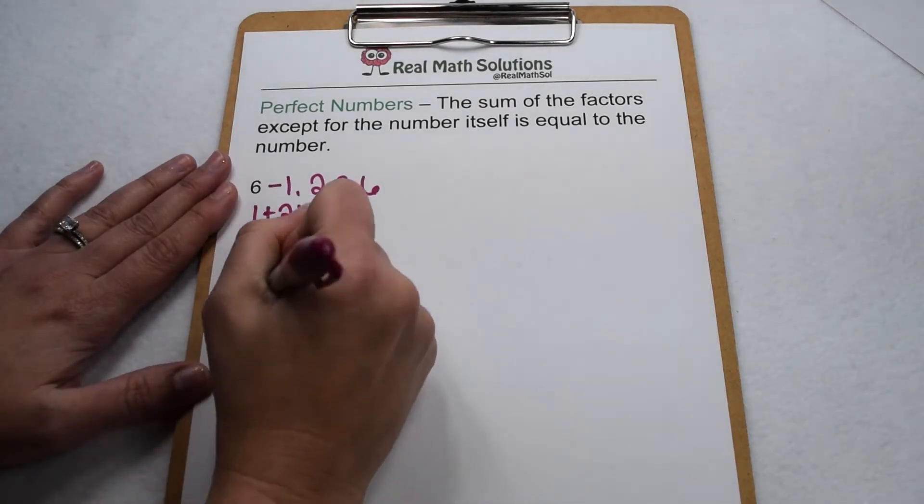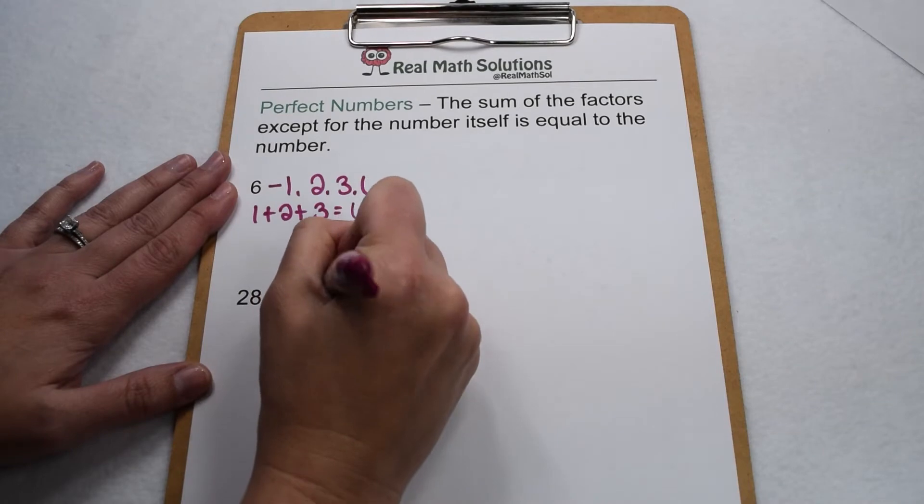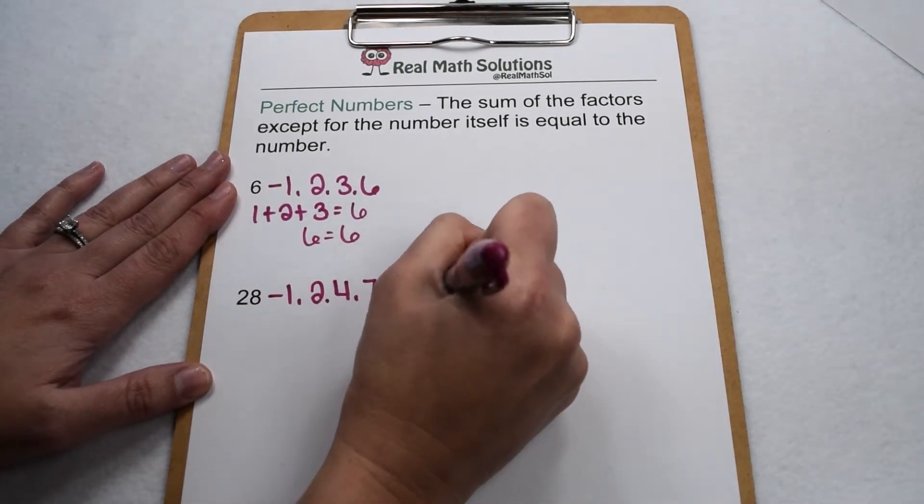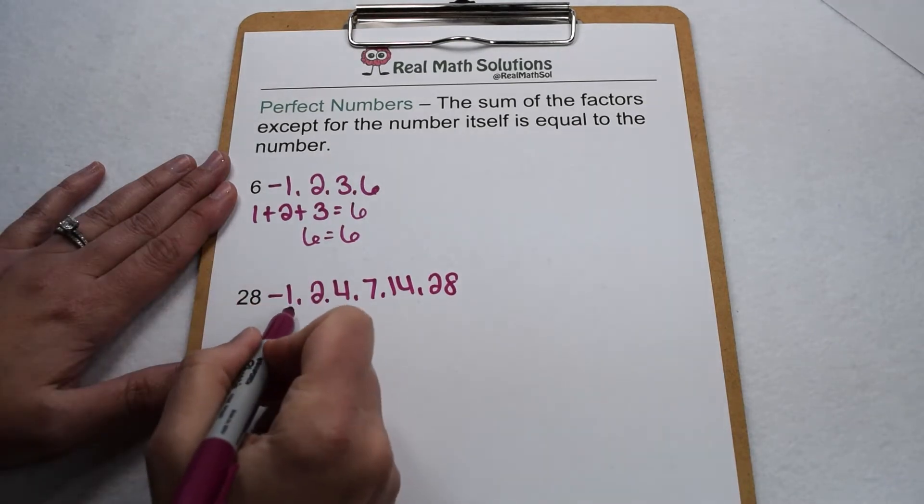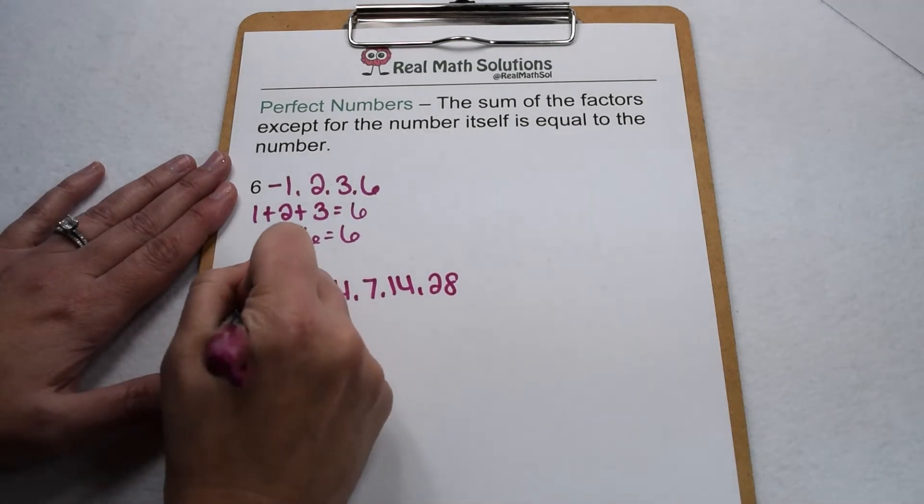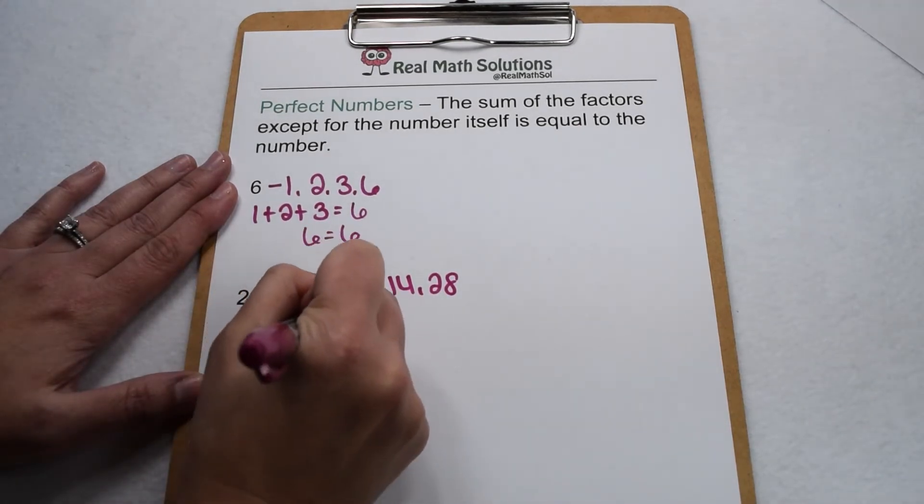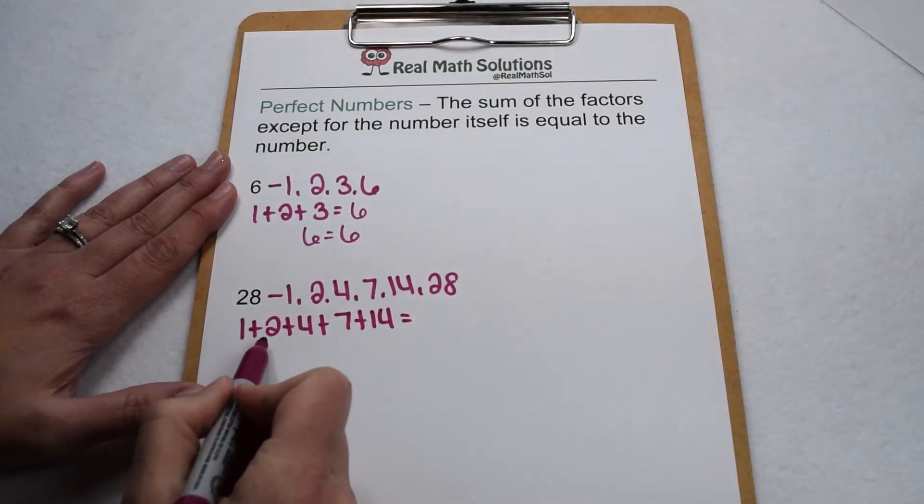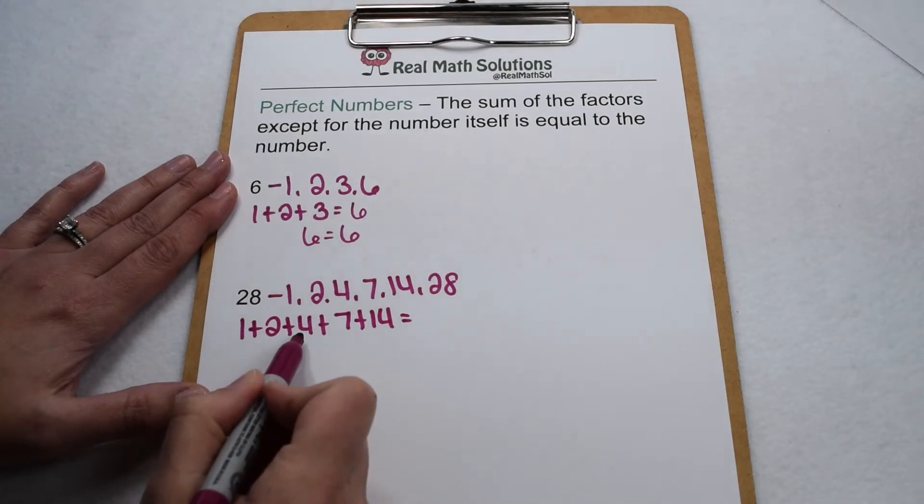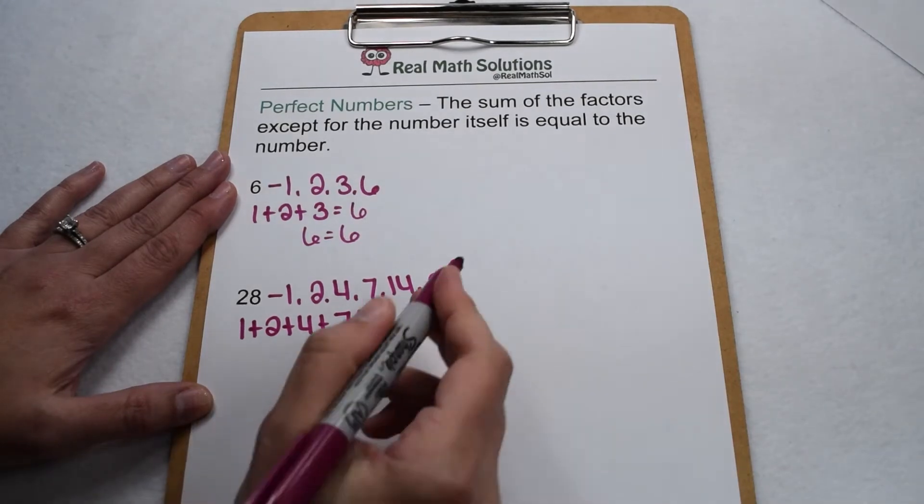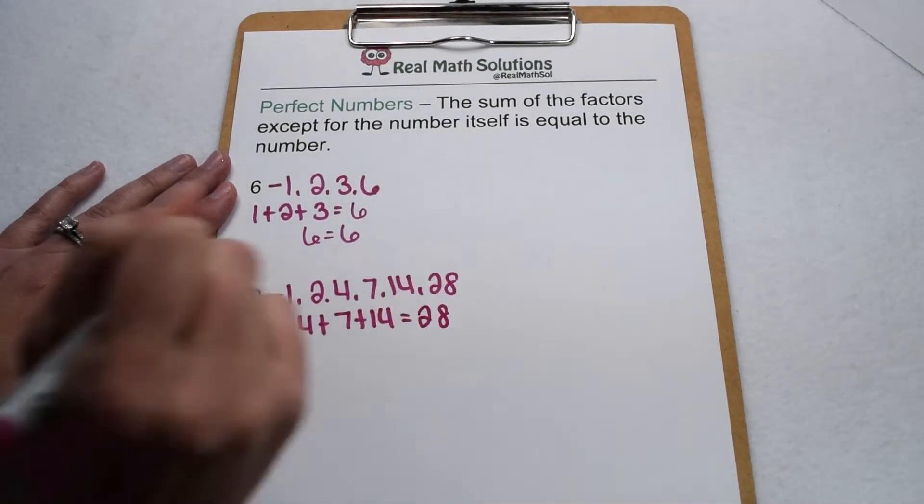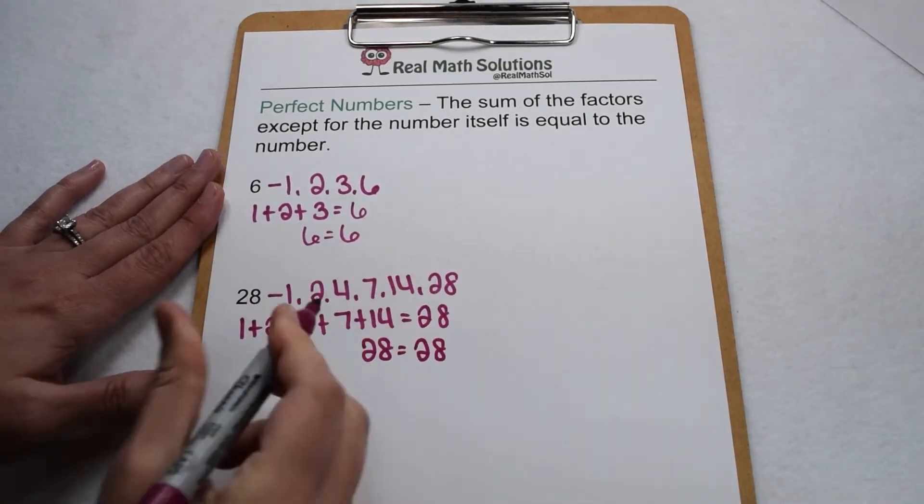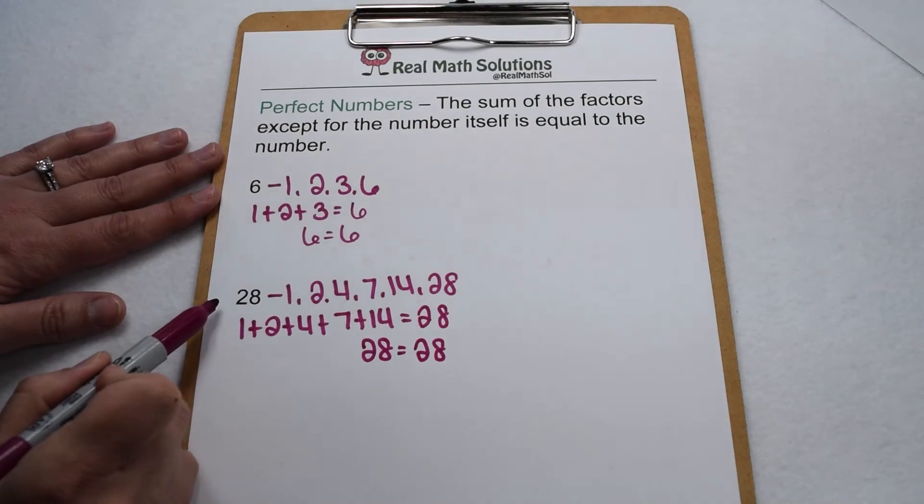We can test that also for 28. Factors of 28 include 1, 2, 4, 7, 14, and 28. We would want to add together all of our factors except the 28. So 1 plus 2 plus 4 plus 7 plus 14. When we add those together, 1 plus 2 is 3. 3 plus 4 is 7. 7 plus 7 is 14. 14 plus 14 is 28. So again, 28 does equal 28. So yes, 28 is also a perfect number.